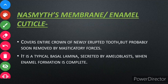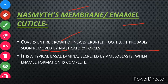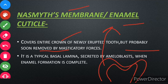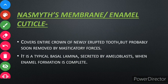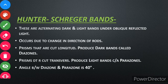Next is Nasmyth's membrane, which we call enamel cuticle. This covers the entire crown of a newly erupted tooth, but is probably soon removed by masticatory forces. When our deciduous teeth are newly erupted, Nasmyth's membrane covers them. It is a typical basal lamina secreted by ameloblasts when enamel formation is complete.